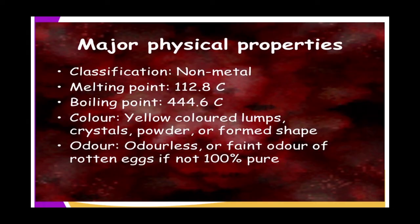When the yellow powder is gently heated, it melts at about 113 degrees Celsius to a clear amber liquid. The melting point of sulfur is 113 degrees Celsius and it is a non-metal. Its boiling point is 444.6 degrees Celsius.